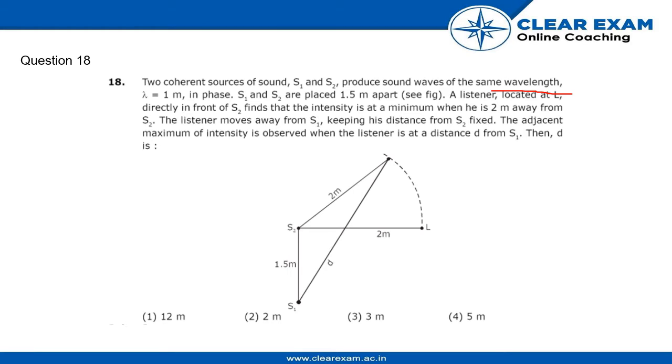We get lambda equals 1 meter. In phase, S1 and S2 are placed 1.5 meters apart. As you can see in this figure, we have 1.5 meters apart S1 and S2.